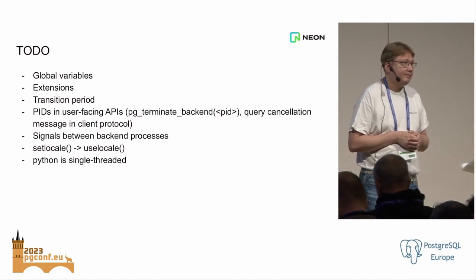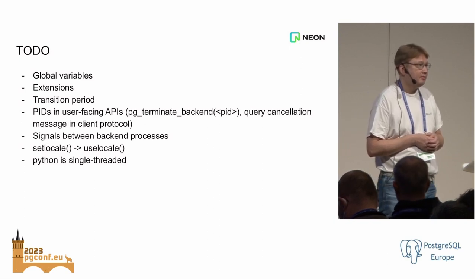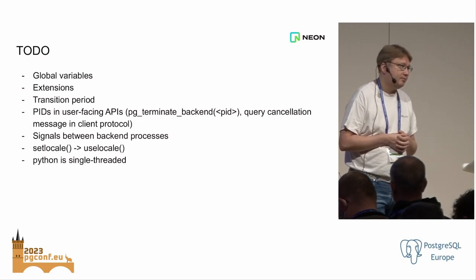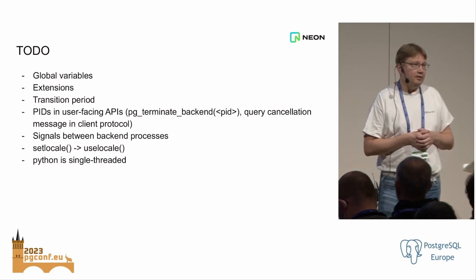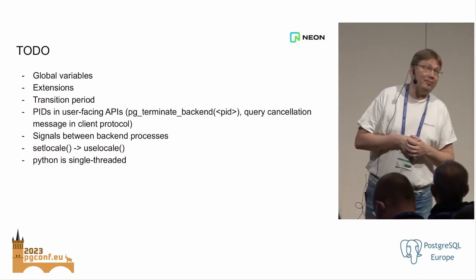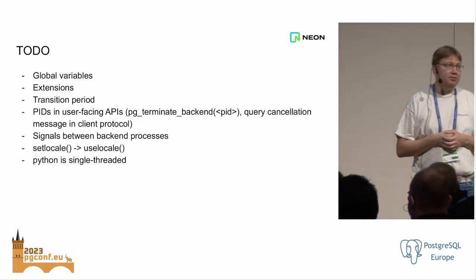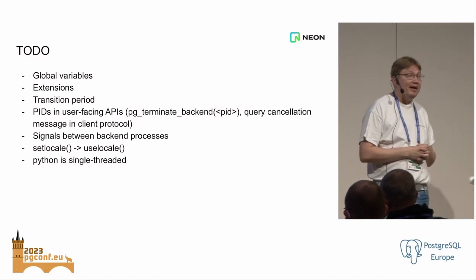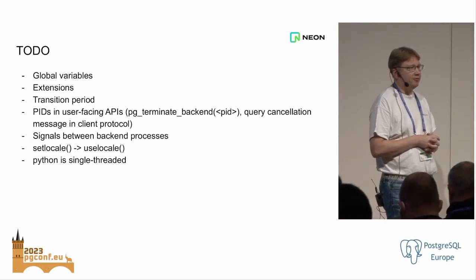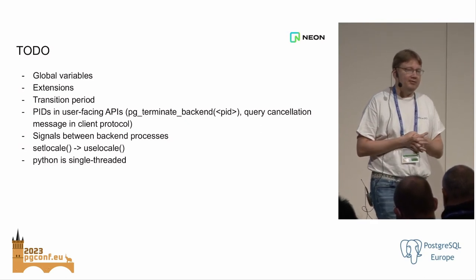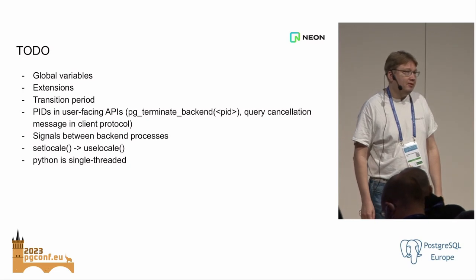Q: Right now we have the multiprocess-based worker processing for parallel query. What is the consideration for not using a preliminary thread-based approach for parallel query as a preliminary stage, which would presumably be easier to implement? A: Maybe — I'm a bit skeptical. My first gut reaction is that if we don't go all the way, we're not going to get the benefits. But maybe there is something there — you could replace the dynamic shared memory with inter-thread communication. But I'm not very hopeful for a hybrid model; it doesn't feel like a good idea to me. We'll see. Thank you.